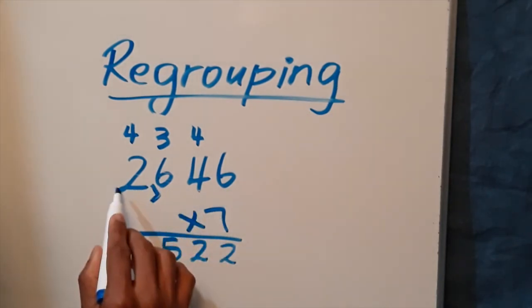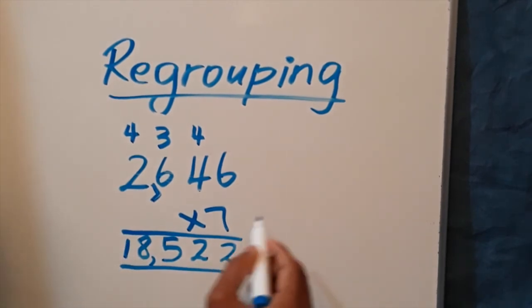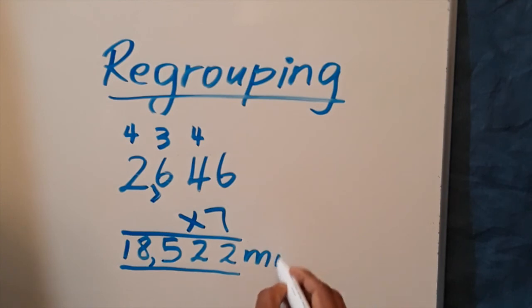Then seven times 2 is 14, 14 plus 4, when you regroup, is 18. So there you have it, an aircraft will travel 18,522 miles in one week.